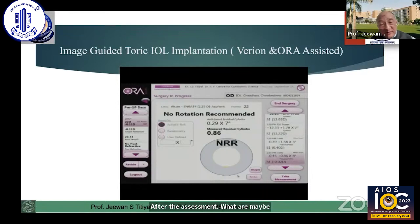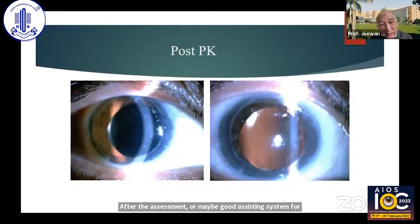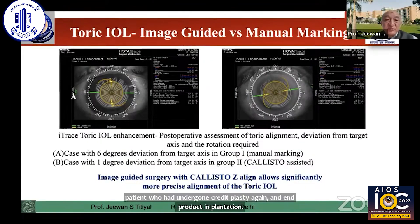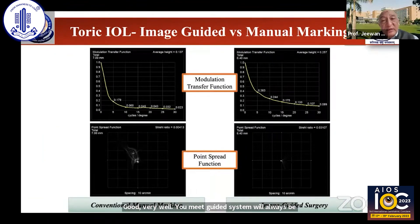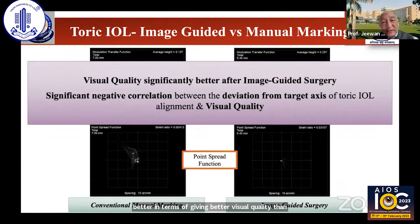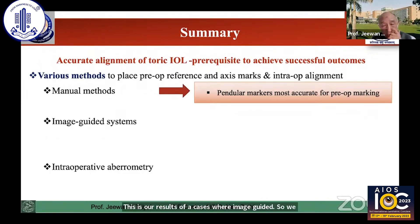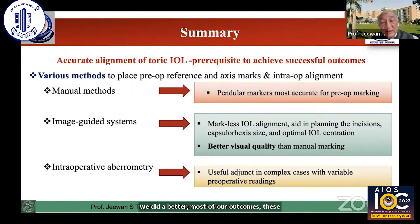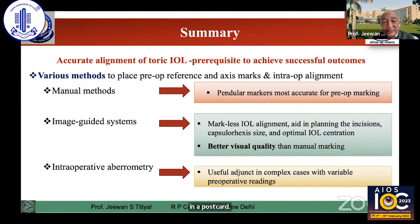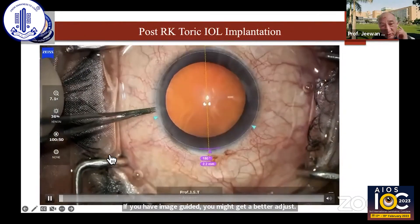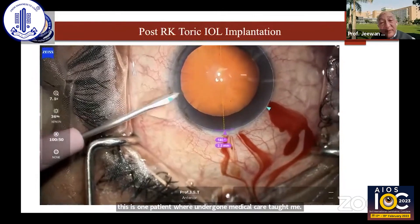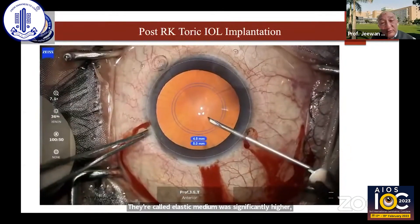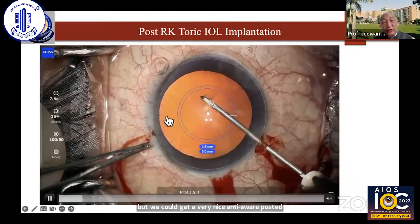So this patient is nicely done after the ORA assessment. ORA may be a good assisting system for a difficult keratometry case. This is one of the patients who had undergone keratoplasty earlier and had a Toric implantation, did very well. Image-guided systems will always be better in terms of giving better visual quality than manual marking in these cases. This is our results of cases where image-guided surgery gave a better post-op outcome. The marking alignment may be sometimes difficult. Therefore, physical marking may be avoided in a post-keratoplasty, post-ectasia patient. If you have image-guided, you might get a better result.